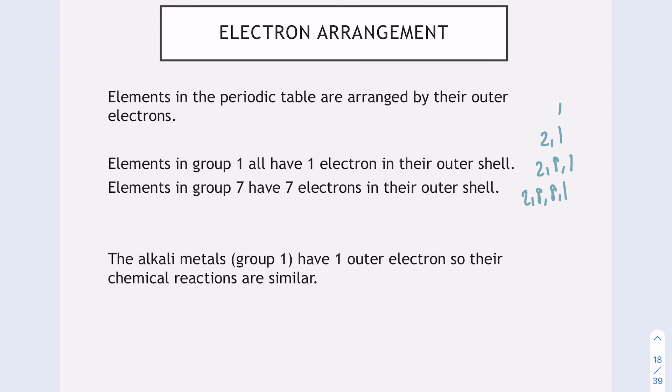Elements in group seven, for example, fluorine is 2, 7. Chlorine is 2, 8, 7. They have seven electrons in their outer shell. And that's why they react very similarly, due to that same number of outer electrons.